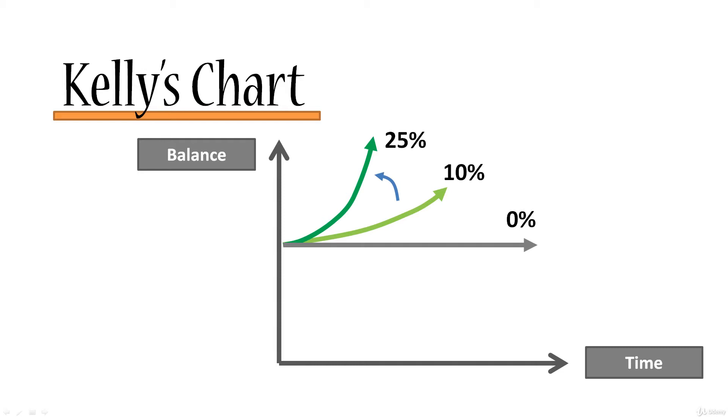If we keep increasing the amount that we bet, say if we bet 40% of our balance, then the arrow will go back down to the same position as it was at 10%. You can check this for yourself. If you bet 40% or 10% of your balance in this particular game, you will get exactly the same outcome in the long run.